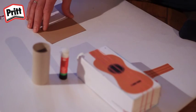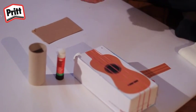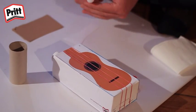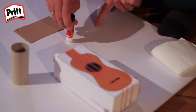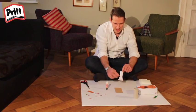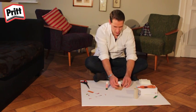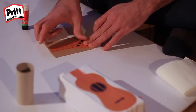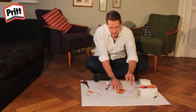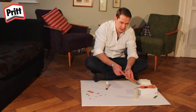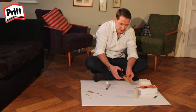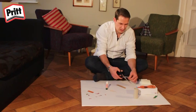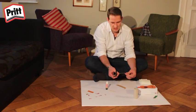Knip dit uit de achterkant van een ontbijtgranendoos. We zetten het hier neer en gaan verder. Gebruik voldoende lijm zodat het goed op het stuk karton plakt. Lijm het op zijn plaats. Als het eenmaal vast zit, kun je het afknippen. Overtollig karton afknippen op deze manier.